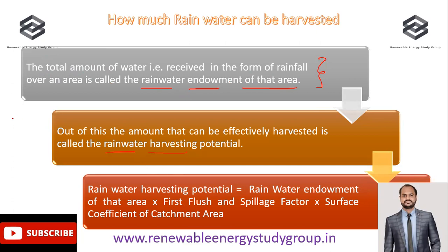For example, if the rainwater endowment of a specific area is one lakh liters on an annual basis, out of this endowment how much rainwater we can store or harvest is very essential for designing the different components of the rainwater harvesting system.